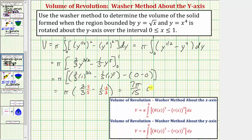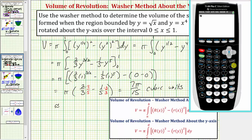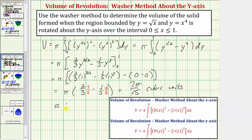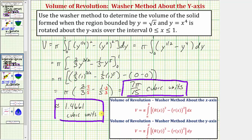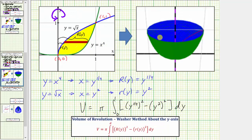This is volume, so it would be in cubic units. Seven pi divided by fifteen is approximately 1.461 cubic units. So here we have the exact volume and the approximate volume of the solid formed by rotating the yellow region about the y-axis. I hope you found this helpful.